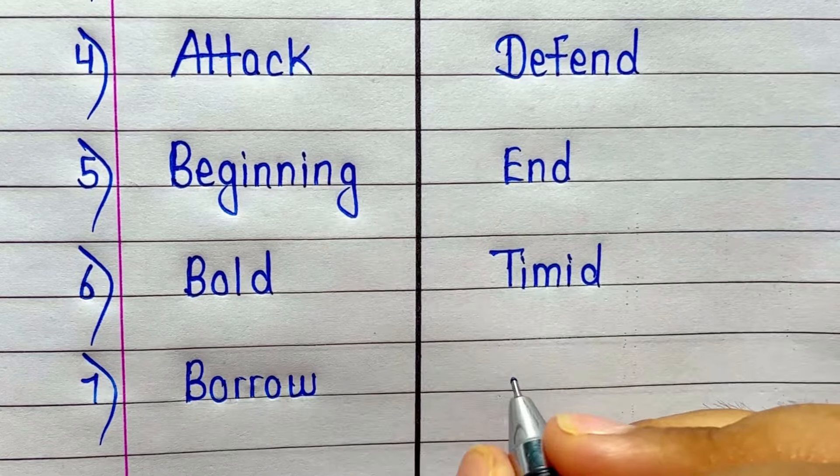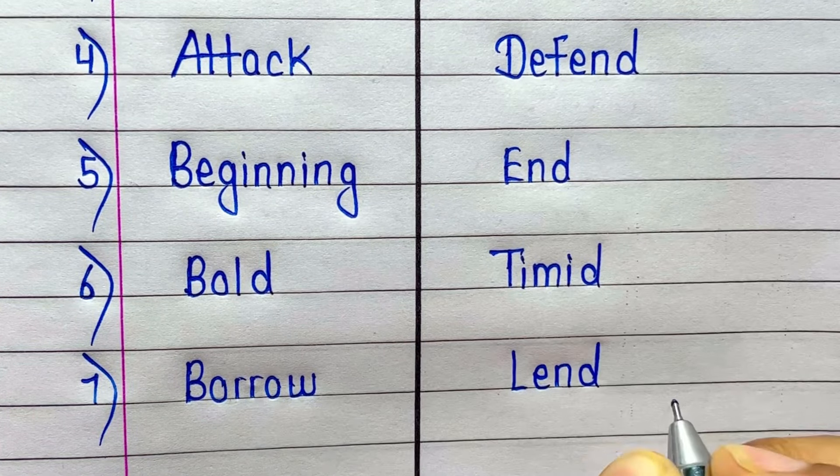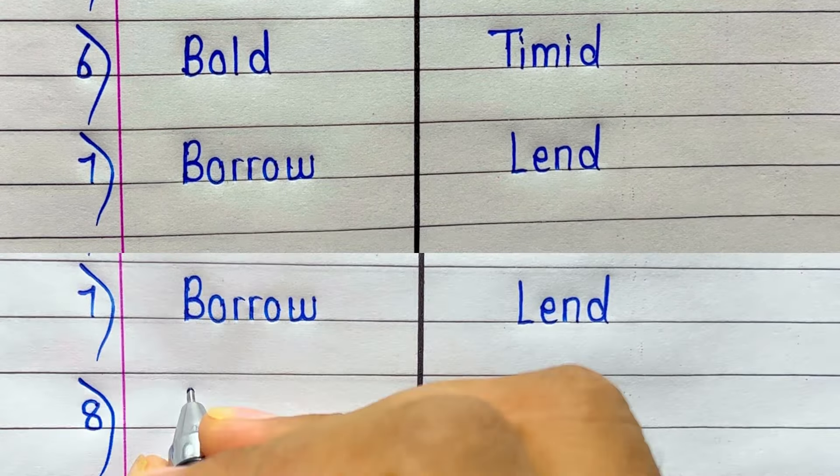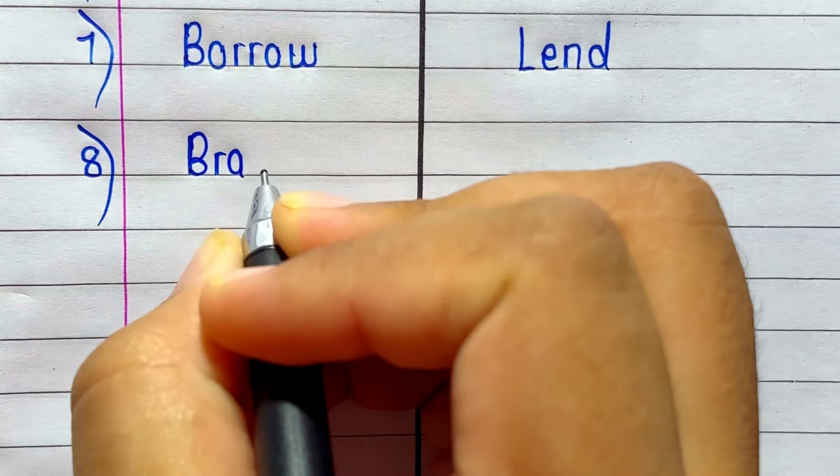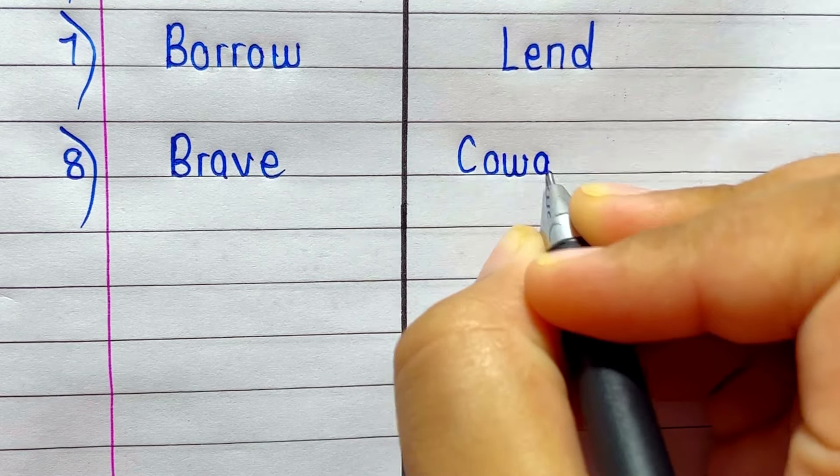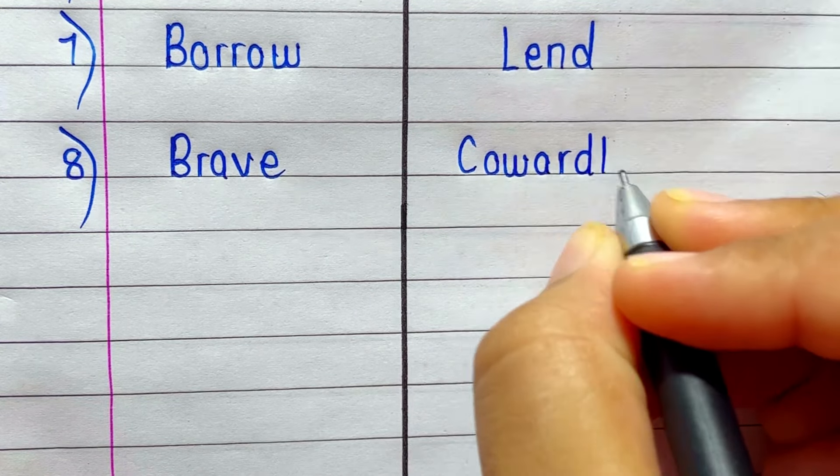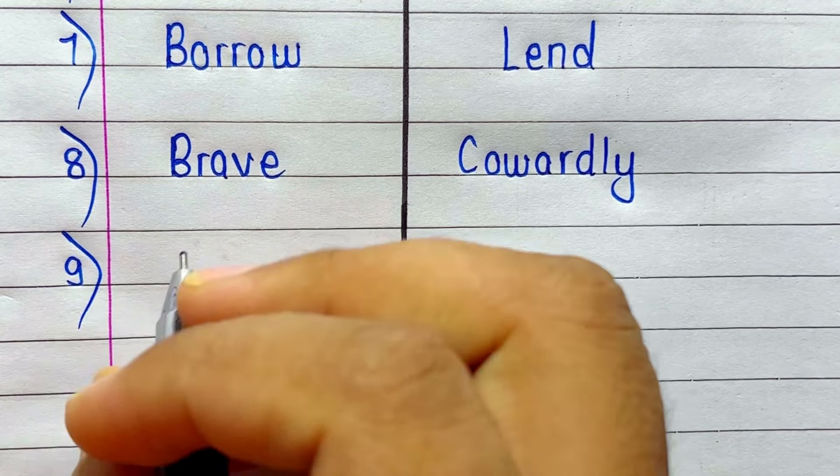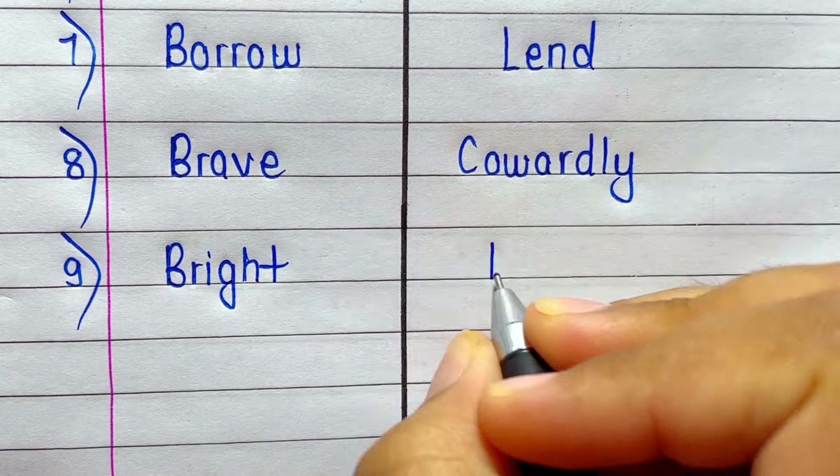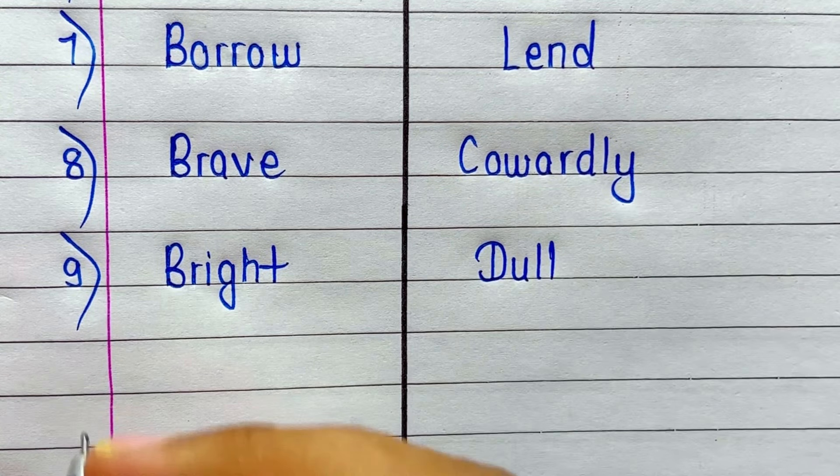Borrow. Antonym of Borrow is Lend. Next is Brave. Antonym of Brave is Cowardly. Bright. Antonym of Bright is Dull.